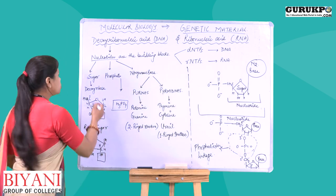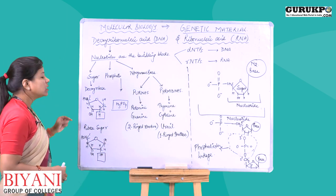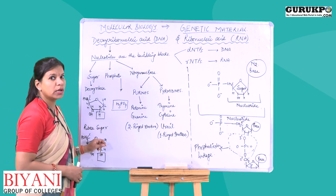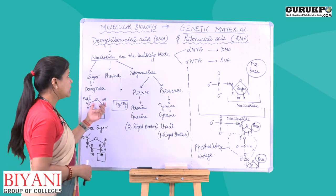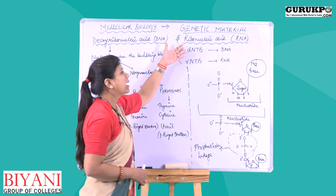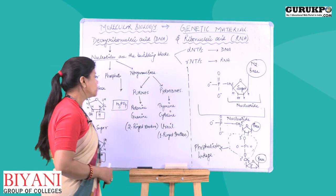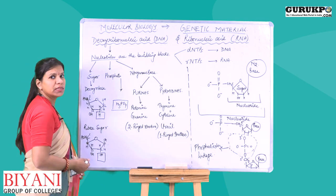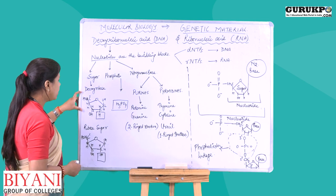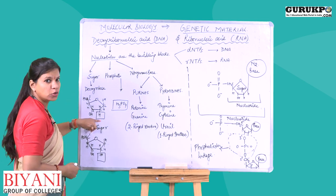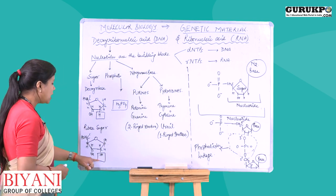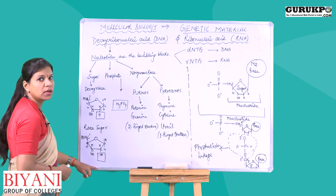Moving on to the sugar molecule — the sugar molecule is classified into two classes: ribose sugar and deoxyribose sugar, on the basis of which the names are given: DNA (deoxyribonucleic acid) and RNA (ribonucleic acid). The basic difference is that deoxyribose sugar has the absence of a hydroxyl group on the second carbon, whereas in ribose sugar the hydroxyl group is present on the second carbon.